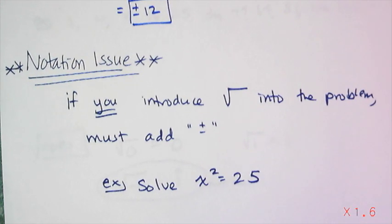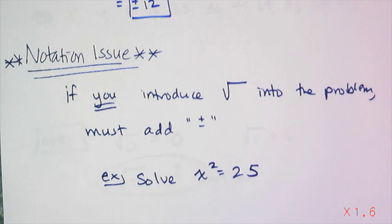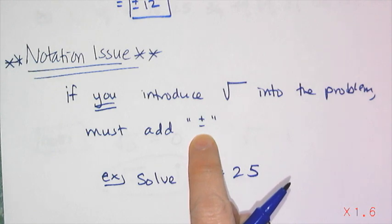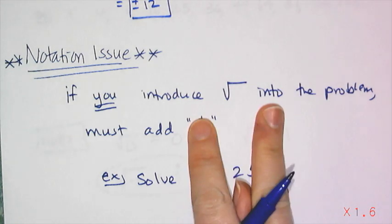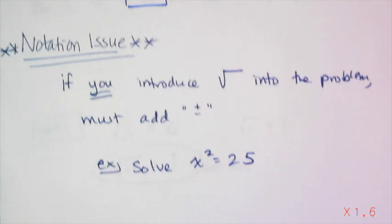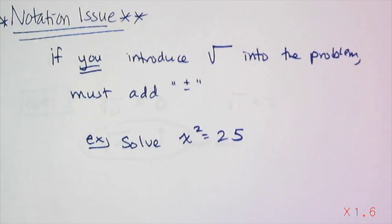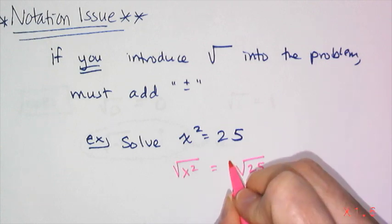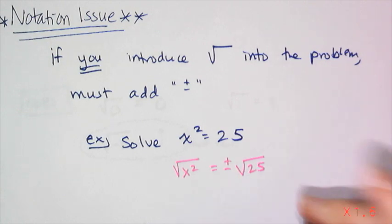Now, if you introduce the square root into the problem, meaning it wasn't there to begin with, but you chose to put it into the problem, and this usually happens when you're solving, then you have to add the plus or minus. Because remember, numbers like 25 have two square roots. You have a positive version and a negative version. So if I ask you to solve x squared equals 25 and you choose, hey, I want to square root both sides, so if you choose to introduce the square root to the problem, you have to remember to put the plus or minus in there.